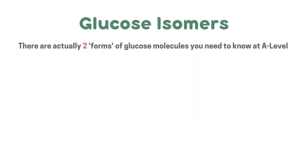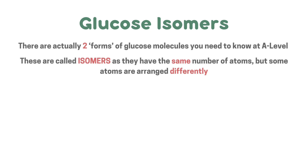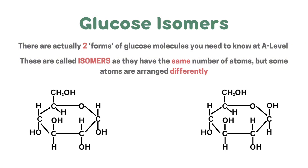There are actually two forms of glucose molecules you need to know at A-level. These are called isomers as they have the same number of atoms but some atoms are arranged differently. Here are the two isomers. As you can see, they look very similar and at first glance you might not actually see any differences. This isomer here is called alpha glucose — you can either say alpha or use the alpha symbol — and this isomer here is called beta glucose, or you can use the beta symbol.